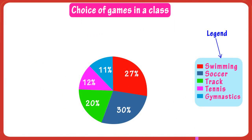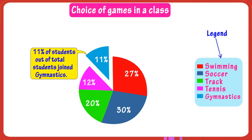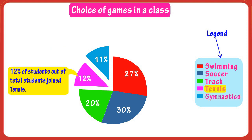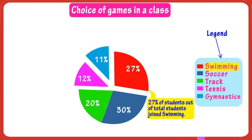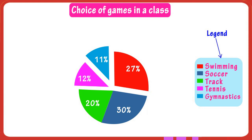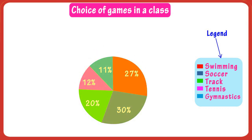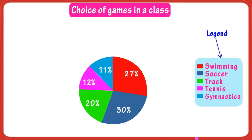This pie chart gives us the percent of students opting for different games. 11% of students are opting for gymnastics, 12% are opting for tennis, and 27% of students are opting for swimming. Remember, a pie chart always shows how a whole is divided up, and the whole circle always shows the total number of things — like the total number of students in this example — and the slices show the percentage values.